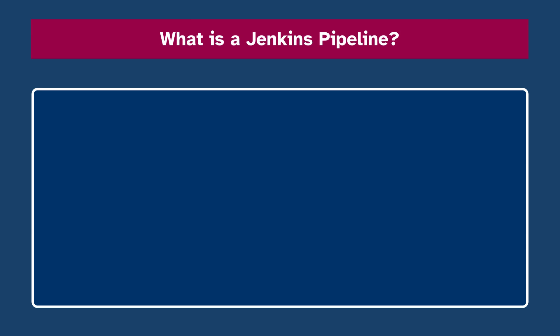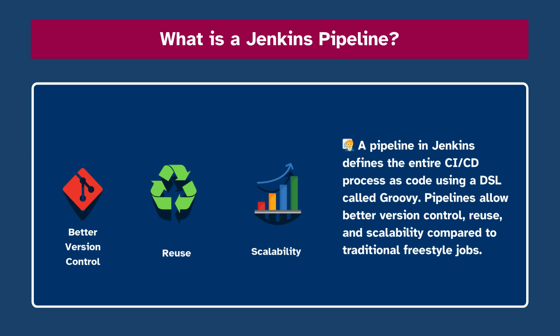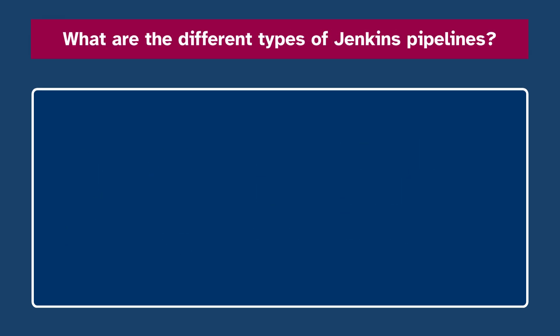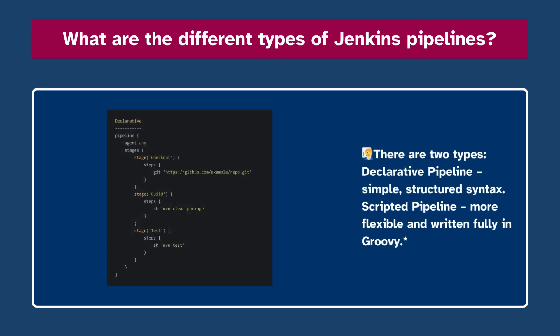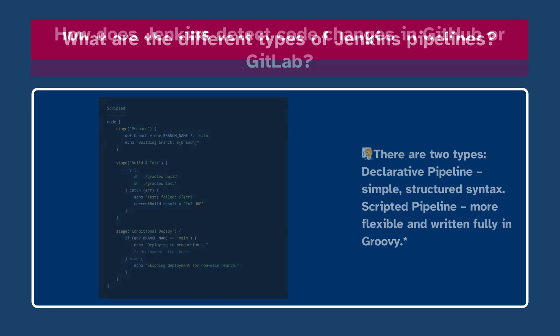Number six: What is a Jenkins pipeline? A pipeline in Jenkins defines the entire CI/CD process as code using a DSL called Groovy. Pipelines allow better version control, reuse, and scalability compared to traditional freestyle jobs. Number seven: What are the different types of Jenkins pipelines? There are two types — Declarative pipeline, which has a simple structured syntax, and Scripted pipeline, which is more flexible and written fully in Groovy.